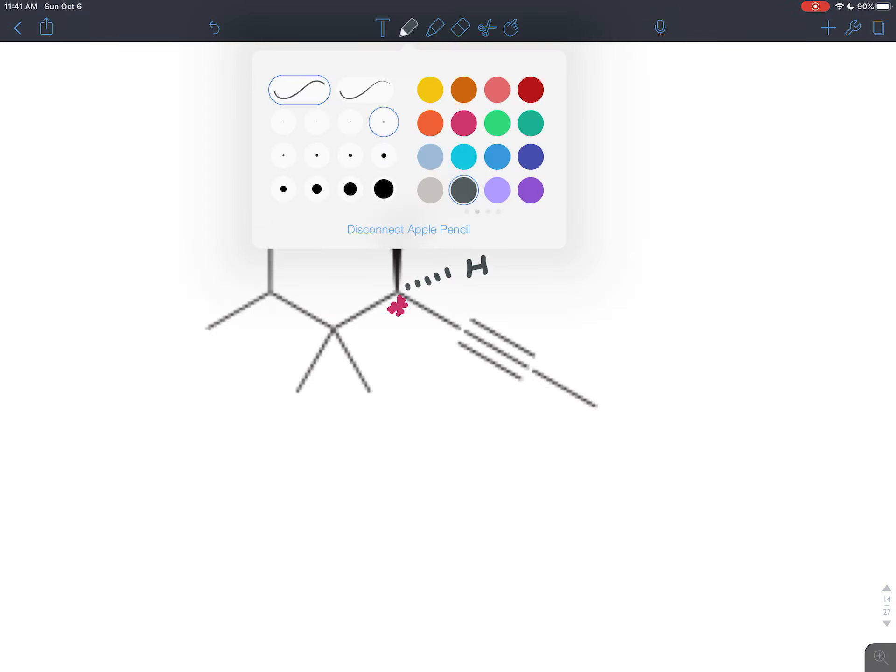So the first step, we're going to use the CIP rules, the Cahn-Ingold-Prelog rules, to figure out whether we have the right or left hand here. And the first step in those CIP rules is to assign priorities based on atomic number. So the carbon to the left has an atomic number of six, the carbon above has an atomic number of six, the hydrogen has an atomic number of one, and the carbon to the right has an atomic number of six. Well, the hydrogen has the lowest atomic number, so that gets the lowest priority, priority of four.